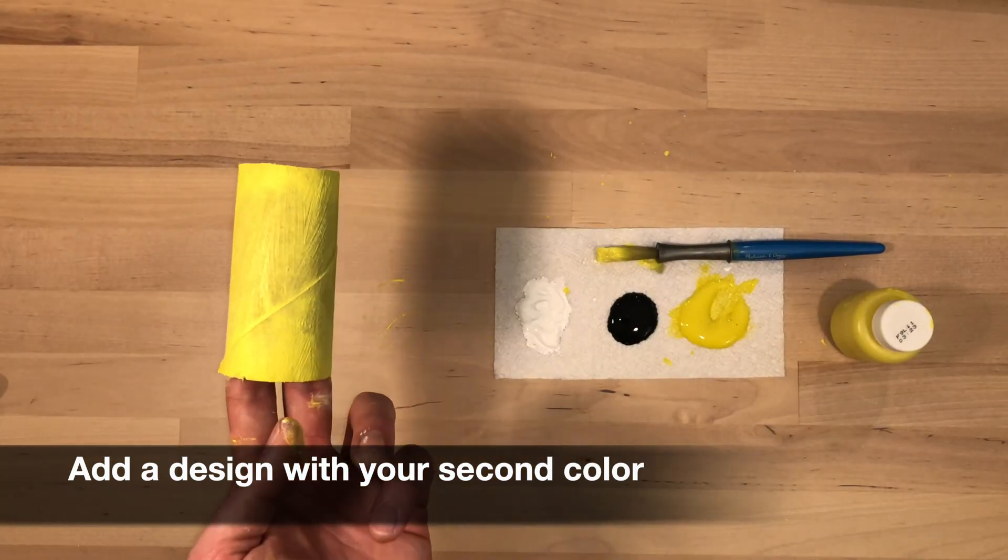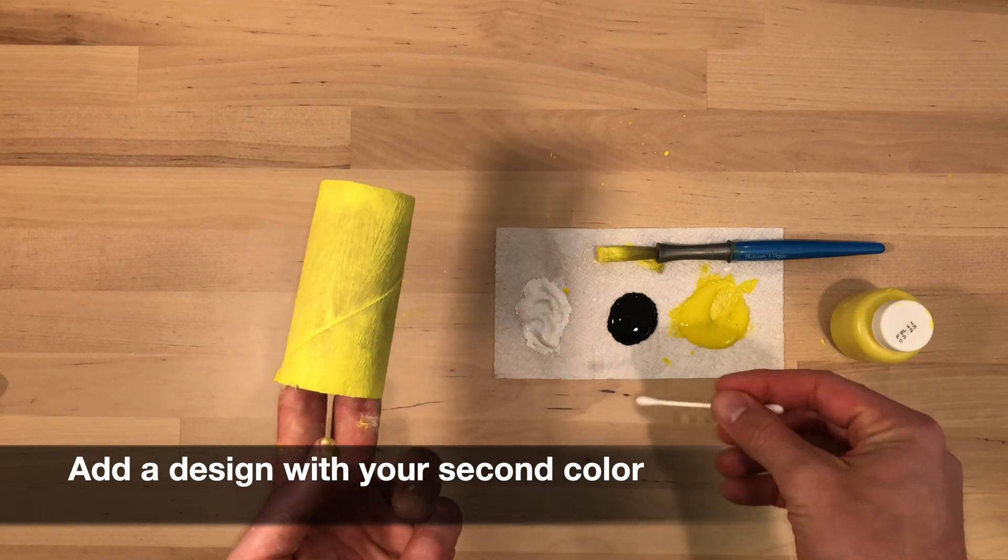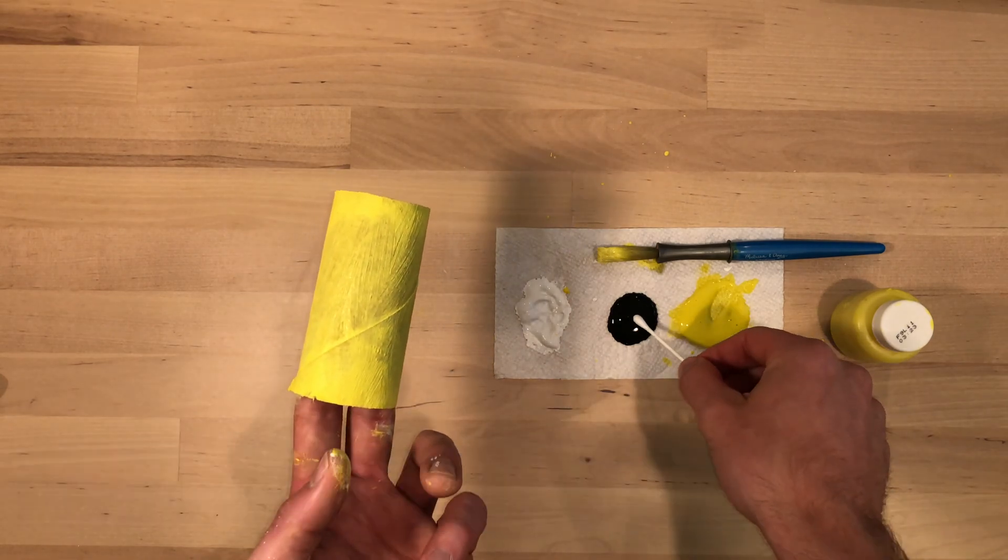Now with my black paint, I'm going to take my q-tip and add a nice dotted design around my kazoo.